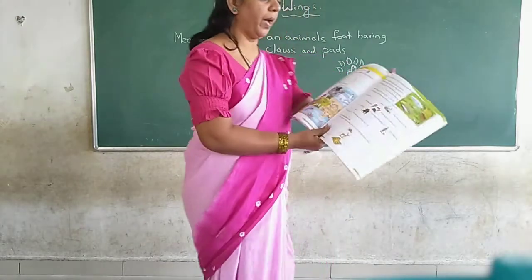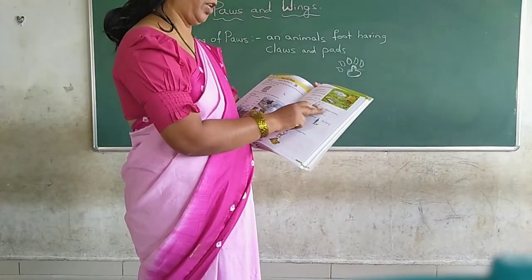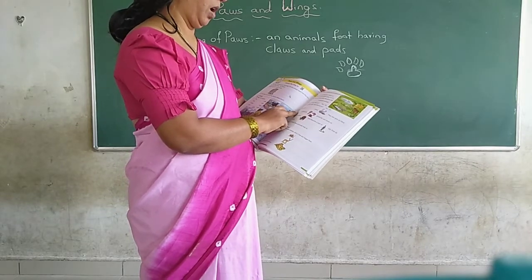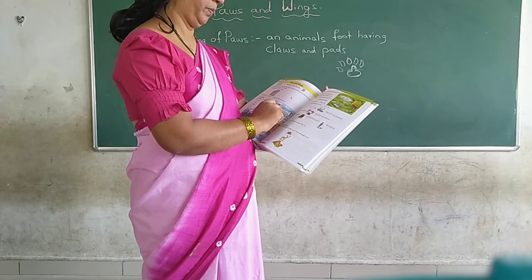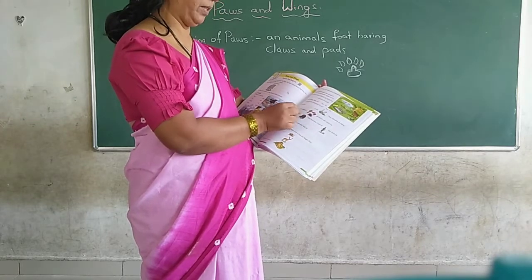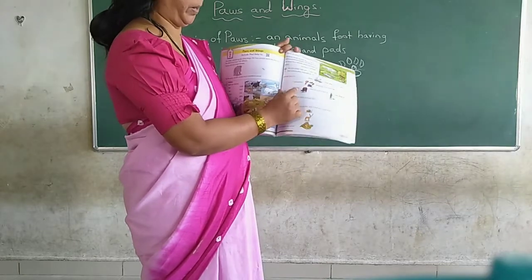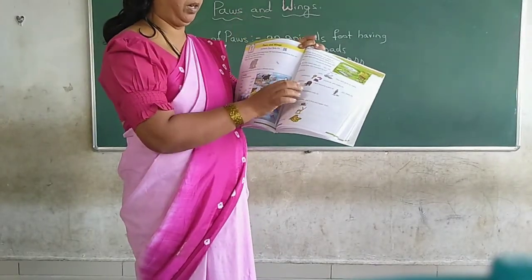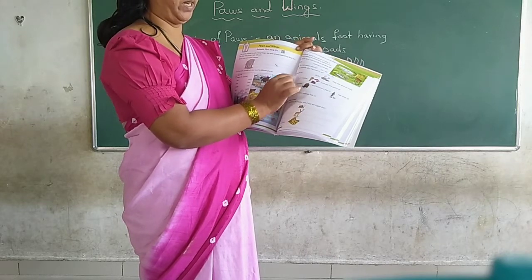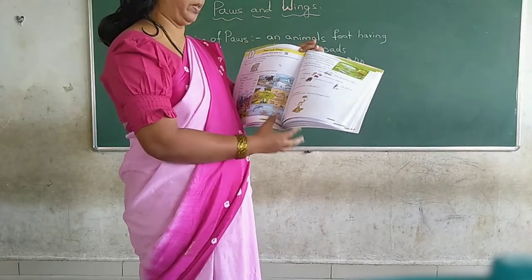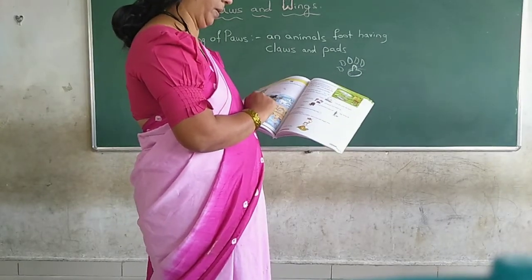Animals give us many household products that are useful to us. Some options are given in the word box — if you read those options carefully you can get the words, though the words are jumbled, so read properly and fill the gaps. Also, name three ways in which farm animals help us.